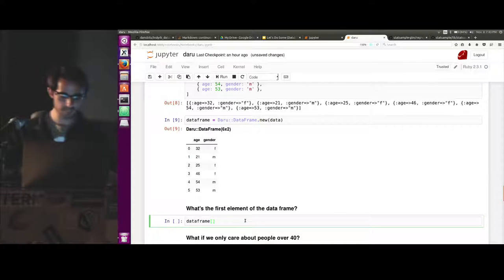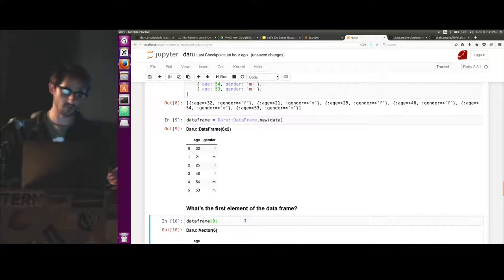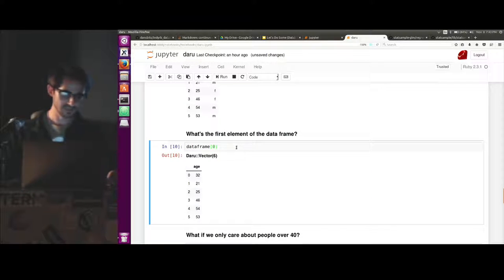Anyone have a guess at what data frame zero is going to return? If you guessed row zero, you're wrong. It's going to return the age. So it's not a huge difference, but it just took me a little time to stop thinking in terms of rows.